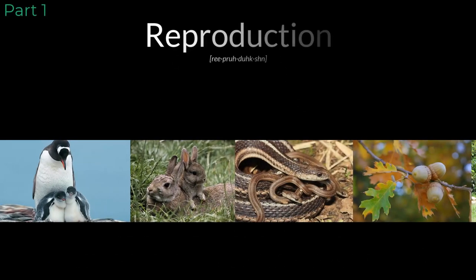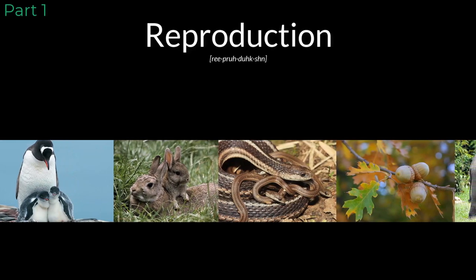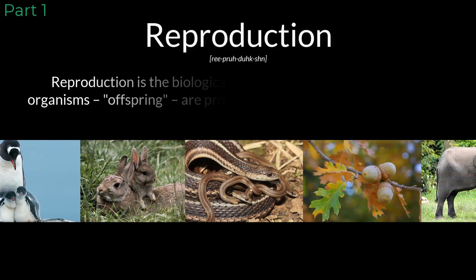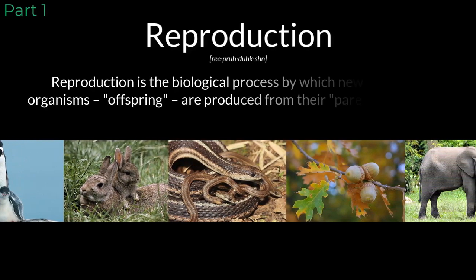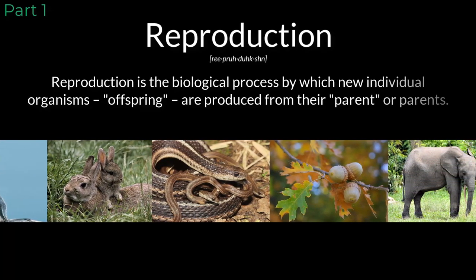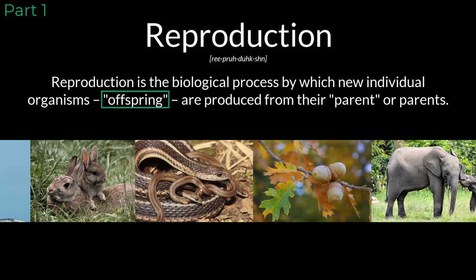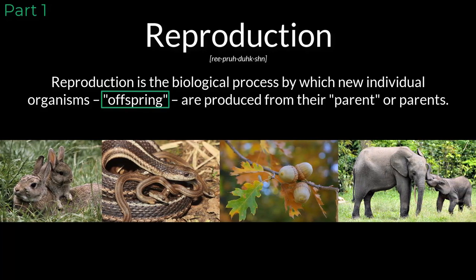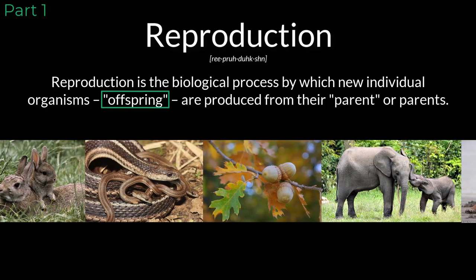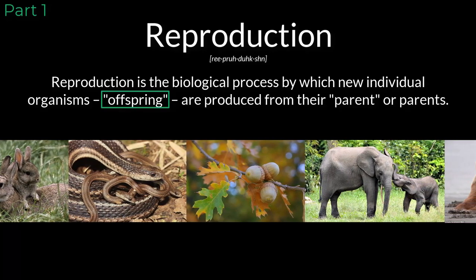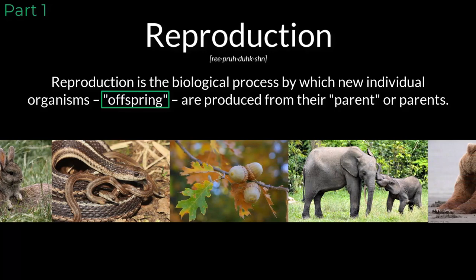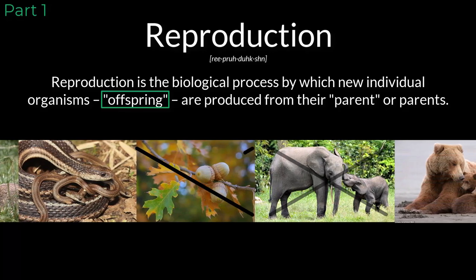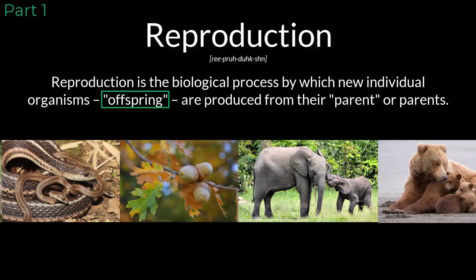Every living species on our planet has the ability to reproduce. After all, it is the process of reproduction that gives rise to the next generation of organisms within every species. And if reproduction were to stop, that species would eventually go extinct on our planet.